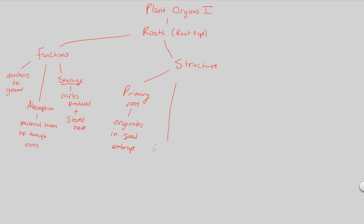From the primary root, we get lateral roots. Lateral roots are those that grow and branch off of the primary root. So while the primary root generally grows downward in one direction, lateral roots grow outward on the lateral sides of it, branching off from that primary root.